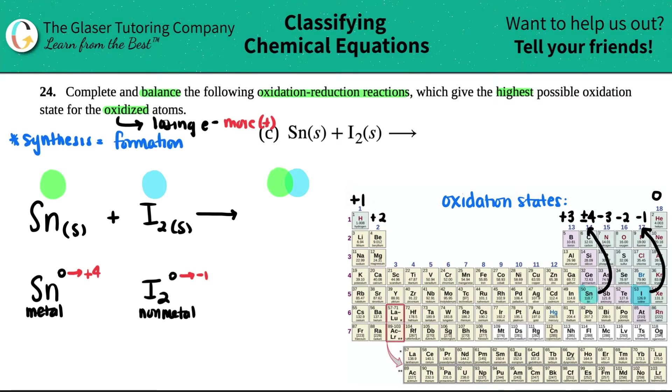Now, the whole thing here with this question was that we need to have the highest possible oxidation state. Just on a side note, tin can either be two positive charges. It could be a plus two, which is not the trend, or it could be a plus four.